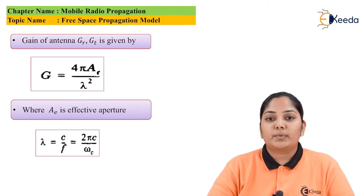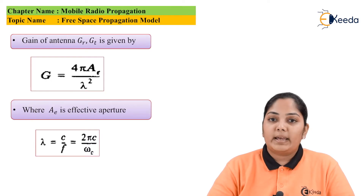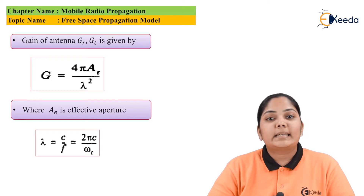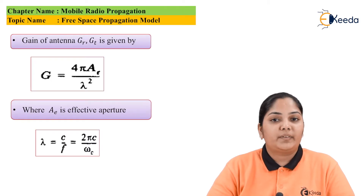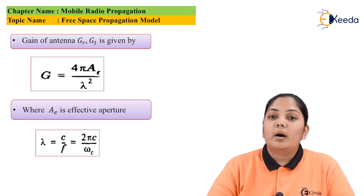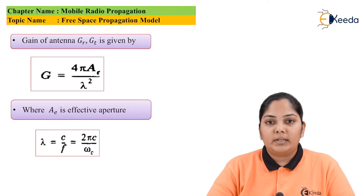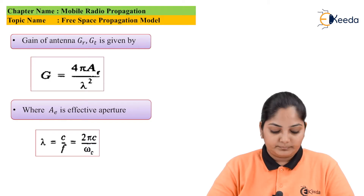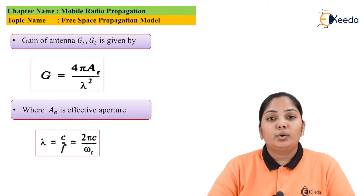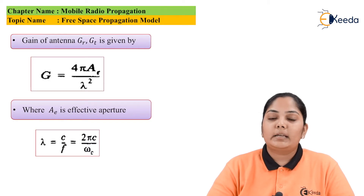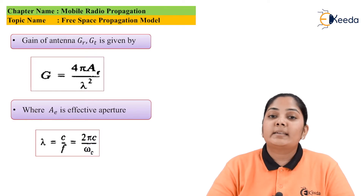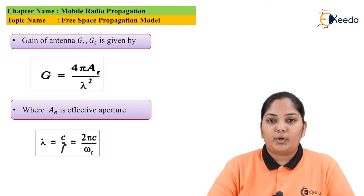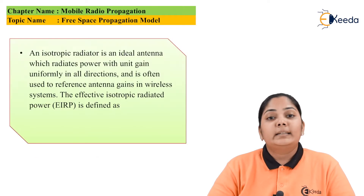Lambda is given by c / f, where c is the speed of light in free space and f is the frequency. This can also be written as 2πc / ωc, where ωc is the angular frequency.